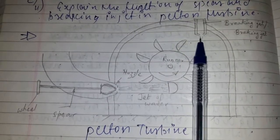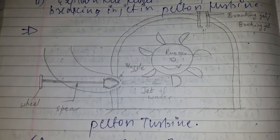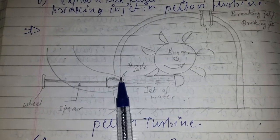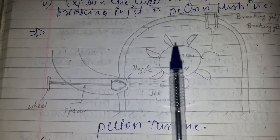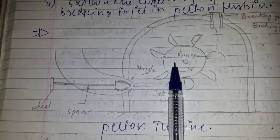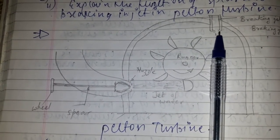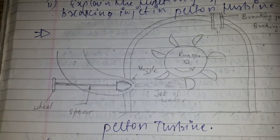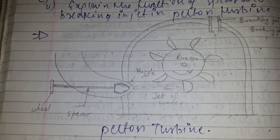Regarding the function of the braking jet: when the turbine is brought to rest, the nozzle is completely closed by pushing the spear forward. However, the runner continues to rotate due to inertia for a considerable period of time. In order to bring the runner to stop in the shortest time, a small nozzle is provided which issues a water jet that falls on the back of the bucket, acting as a hydraulic brake for reducing the speed of the runner.